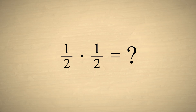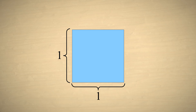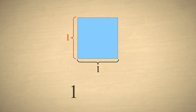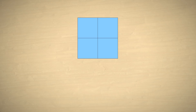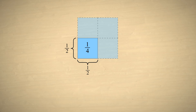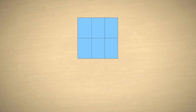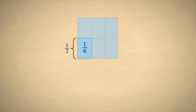What happens when we multiply a fraction times a fraction? We can visualize this by starting with a square with a height and width of one unit. The area of a square is equal to its height times its width, so this square has an area of one. Now if we divide the square into four equal pieces, each piece will have an area of one-fourth. Since the height and width of each piece is one-half, we can see that one-half times one-half is one-fourth. If we divide the square into thirds horizontally, we will have six equal pieces, each with an area of one-sixth. Since each piece has a height of one-half and a width of one-third, we see that one-half times one-third is one-sixth.